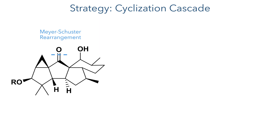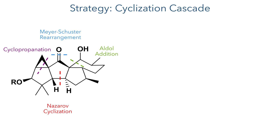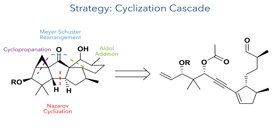The researchers developed an interesting strategy to construct this ring framework. They hypothesized that they could utilize a cyclization cascade to construct multiple bonds in a single reaction. This cascade would include a Meyer-Schuster rearrangement, a Nazarov cyclization, a cyclopropanation, and also an aldol addition. This pentacyclic intermediate could ultimately be derived from a monocyclic precursor containing two alkenes and an alkyne.